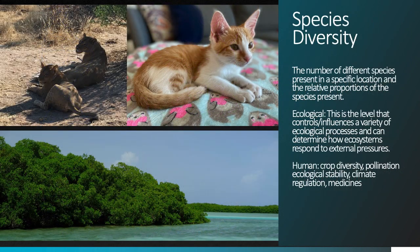Species diversity is measured as the number of different species present in a specific location as well as the relative proportion of species present. These are actually two formal definitions of species-level diversity commonly used in biological studies. So we can imagine an example where there are two species present, like the lions on the left and the house cat on the right — that would be one measure of diversity at the species level: you have two species.